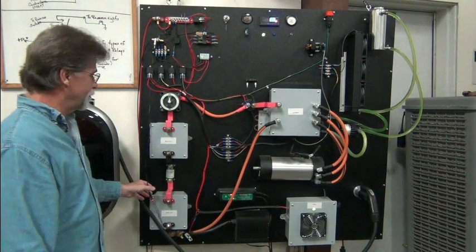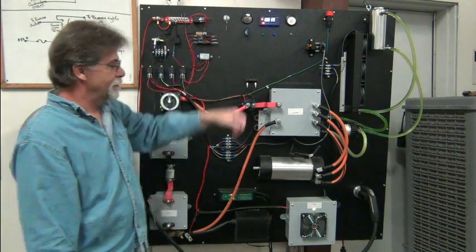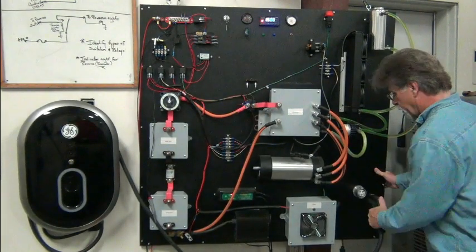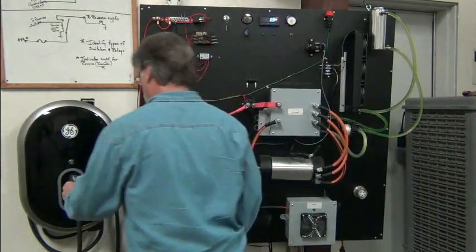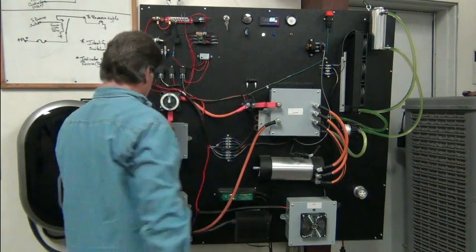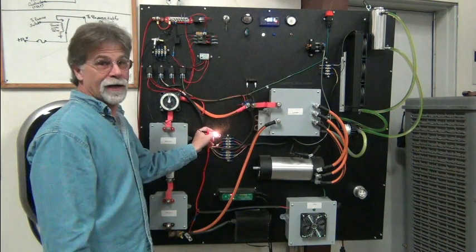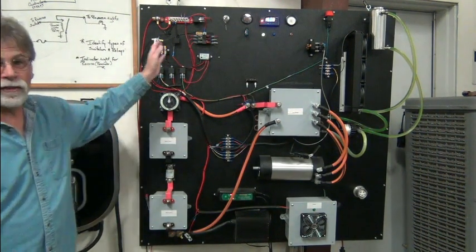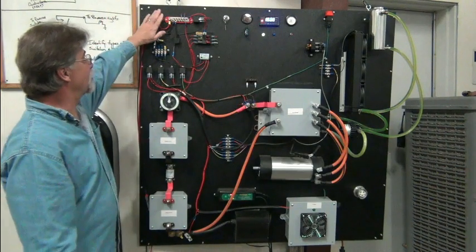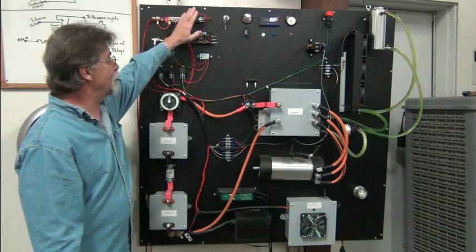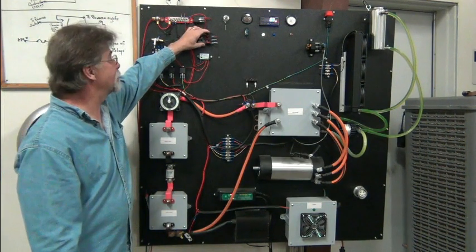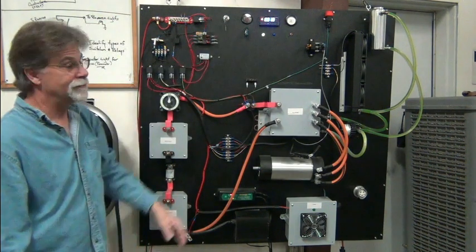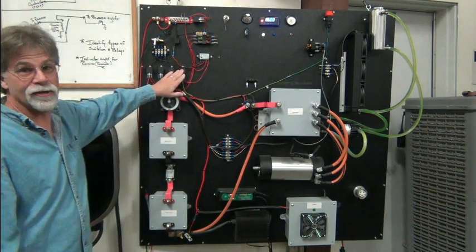But if I unplug the thing, I now have my 12 volts again. So that's our 12 volt control circuit. Comes from auxiliary battery, goes through our power relay to our fuse block, based on our ignition being on. It goes from there, it goes through our safety interlock.